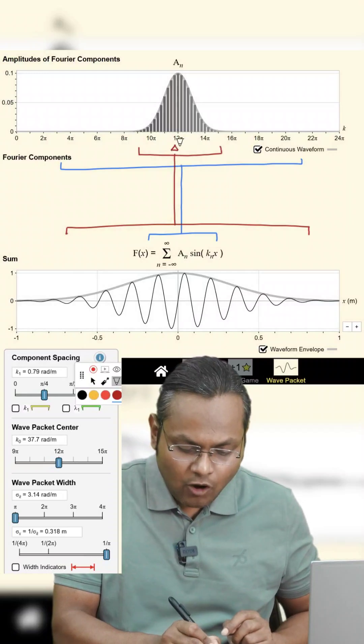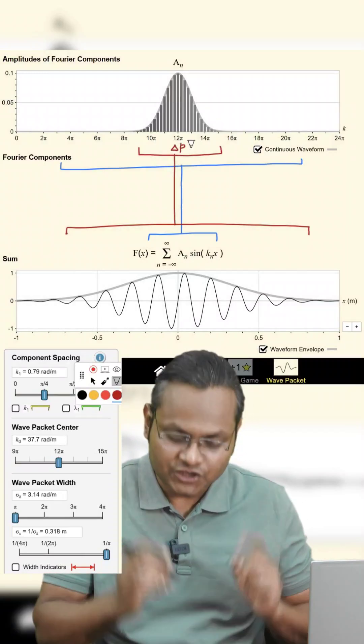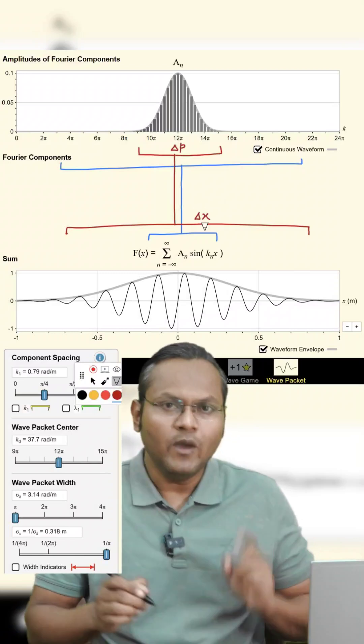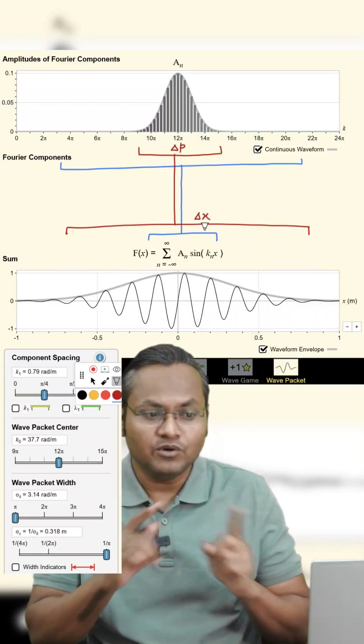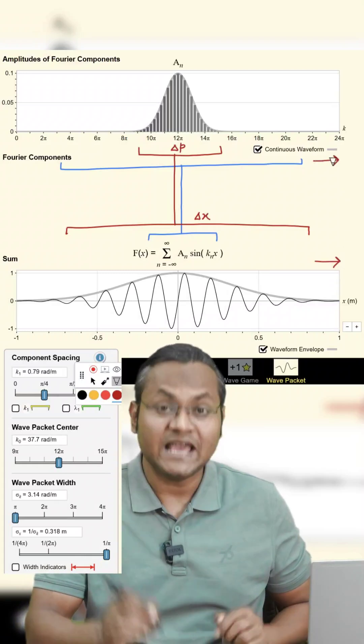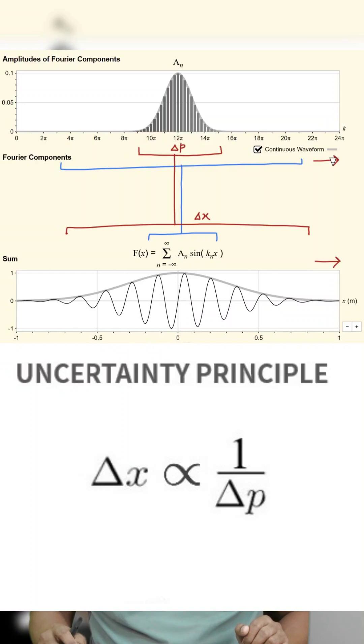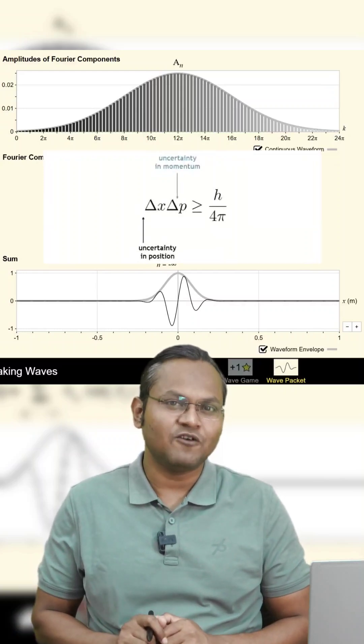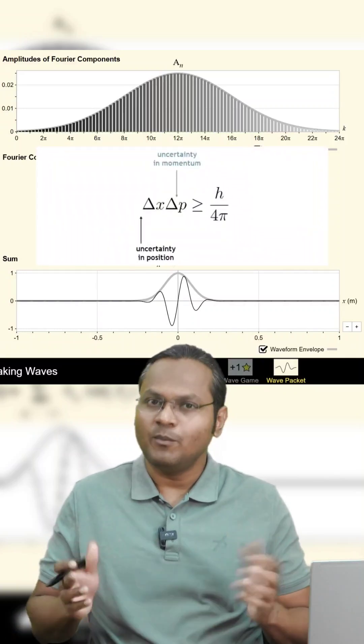That means the spread of momentum is inversely proportional to the spread of position. A wave packet which is localized in position space is spread out in momentum space and vice versa. That means uncertainty in position and momentum are inversely proportional, which is simply a mathematical result of Fourier transform for the wave nature of a particle.